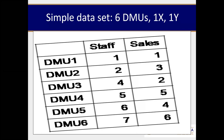Look at this data carefully. It is made up of one input and one output, six DMUs — that's six decision-making units, DMU one to six on the far left. The input is staff and the output is sales. DMU one uses one staff to produce one sale, while DMU six uses seven staff to produce six sales.